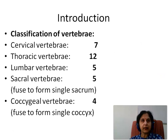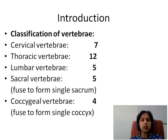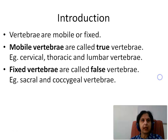We can classify them as cervical vertebrae, which are 7 in number; thoracic are 12; lumbar vertebrae are 5; sacral vertebrae are 5, which fuse to form a single sacrum; and coccygeal vertebrae are 4, which fuse to form a single coccyx.